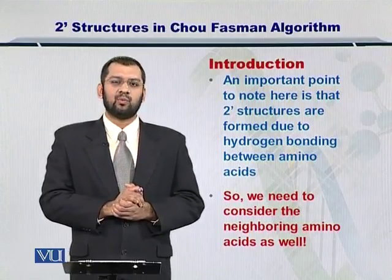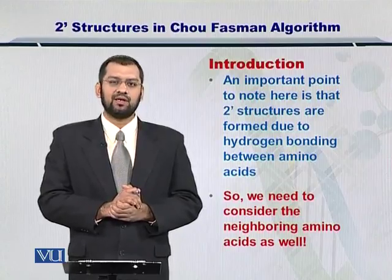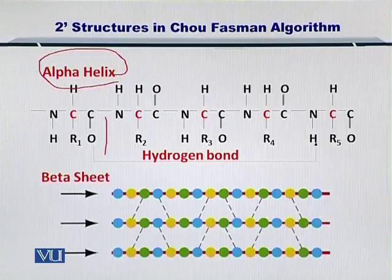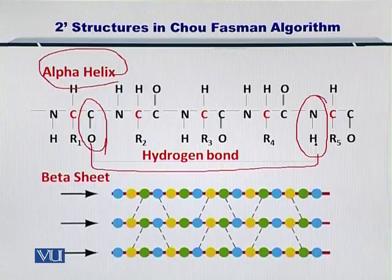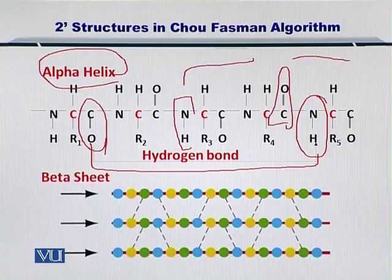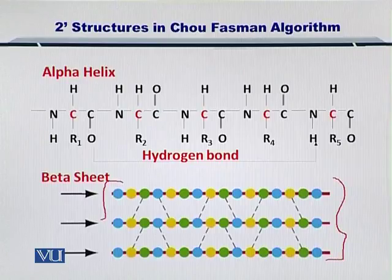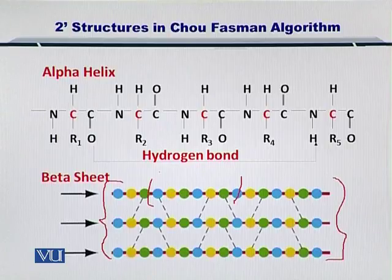Let's review why that is the case. If you look at this slide, you may remember that an alpha helix is formed by hydrogen bonding between every fourth C and N terminal, as shown here, and this process is repeated for every N and C terminus with the corresponding fourth residue later in the chain. Also, beta sheets, as shown here, are formed once five or more residues come together in hydrogen bonds to form a beta sheet.